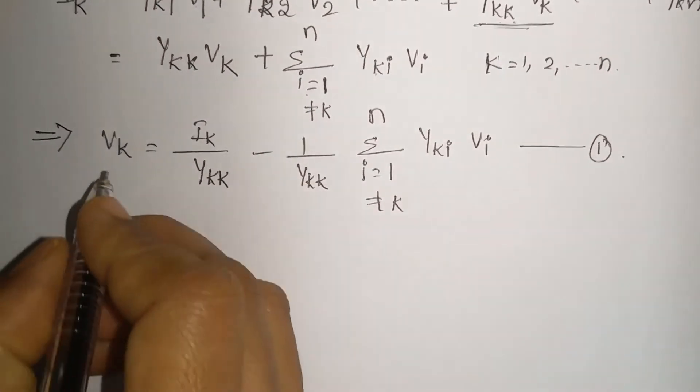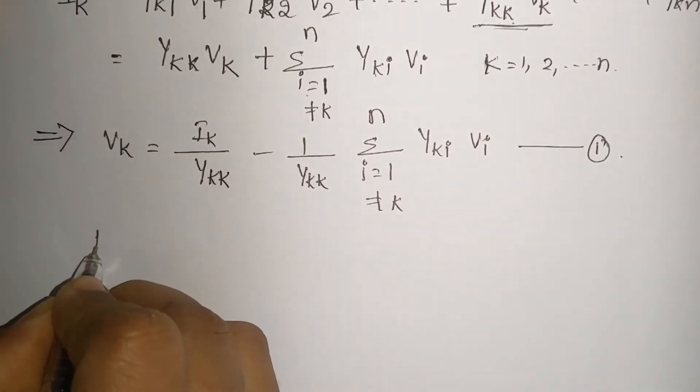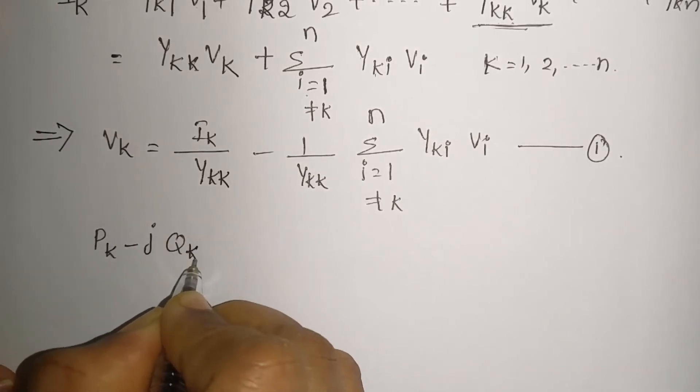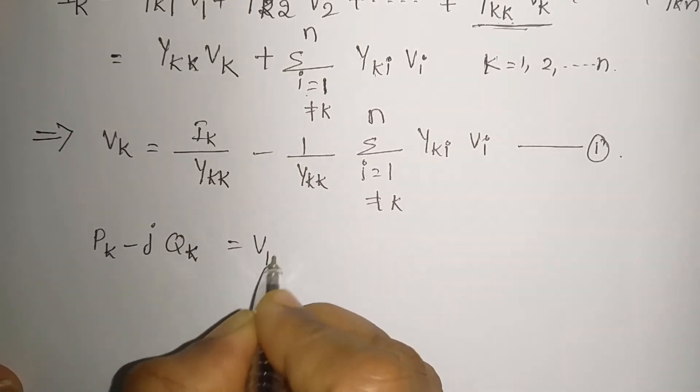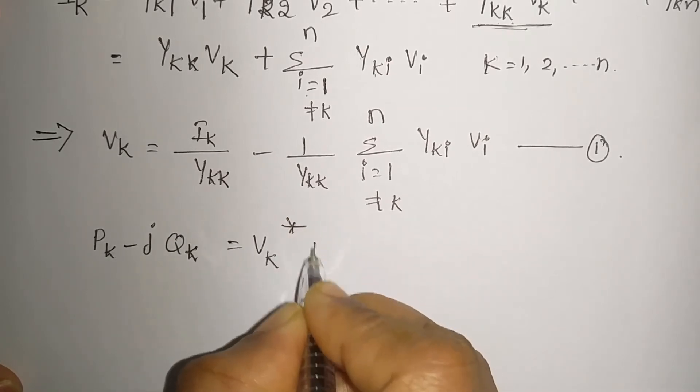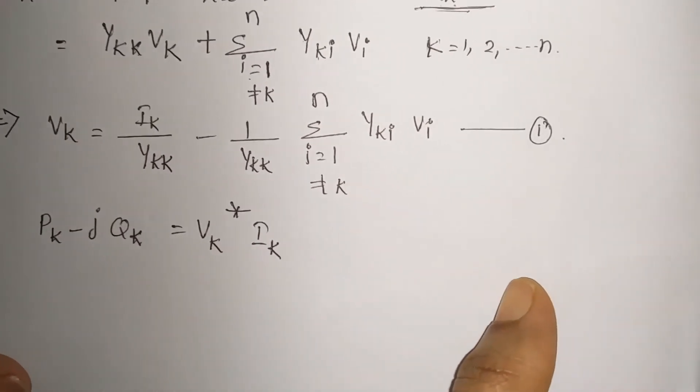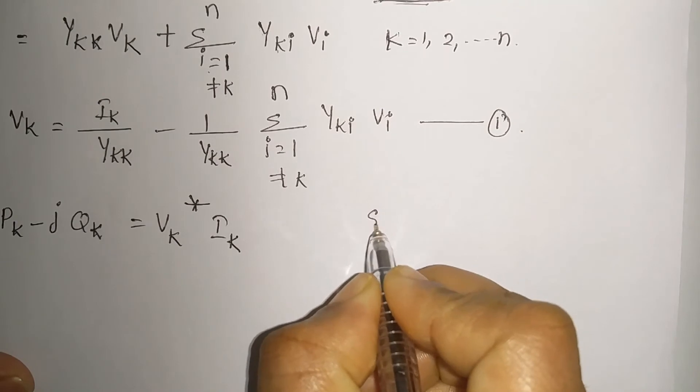We know what is the complex power equation. So complex power will be taken as Pk minus jQk is equal to Vk conjugate into Ik. How you got this conjugate, let us see in a short note.